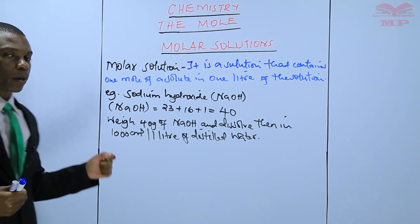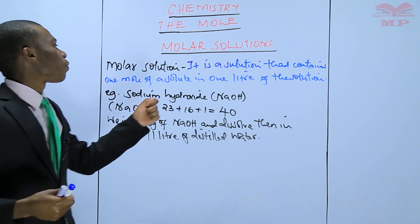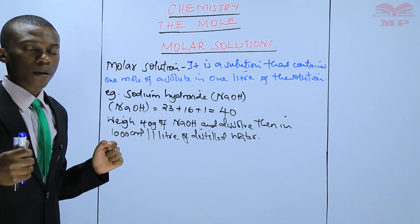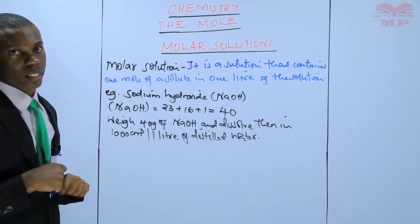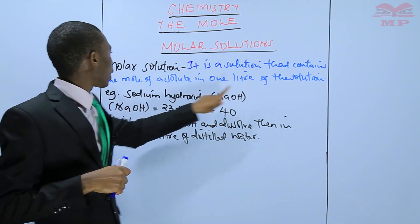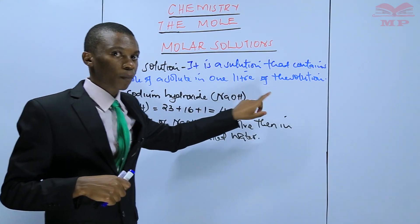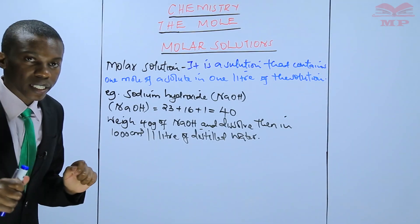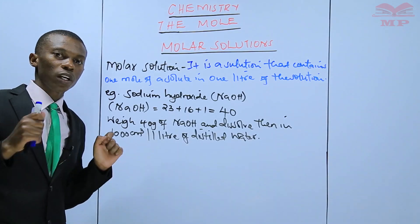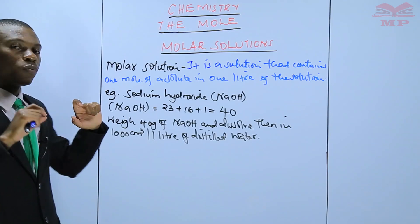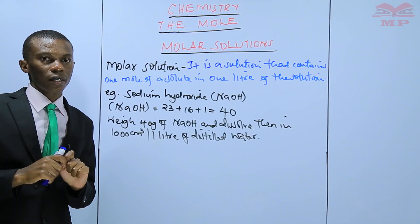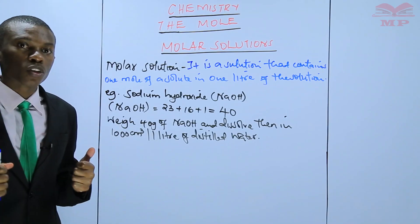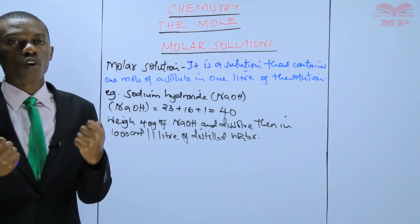So weigh 40 grams of sodium hydroxide — you're weighing using a weighing balance — and dissolve the 40 grams in 1000 centimeters cubed or one liter of distilled water. Then you will have one molar sodium hydroxide. A molar solution contains one mole of a solute in one liter. One mole of sodium hydroxide is equivalent to a mass of 40 grams, so weigh 40 grams accurately and dissolve in one liter of distilled water, then you will have a molar solution.